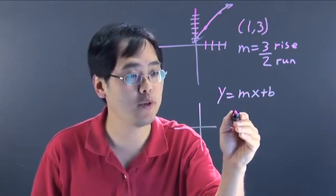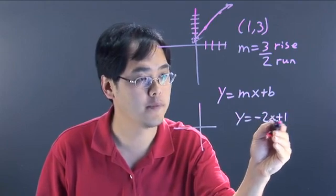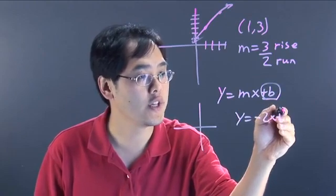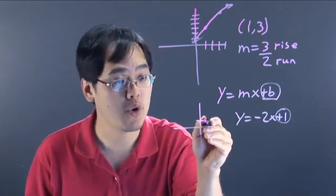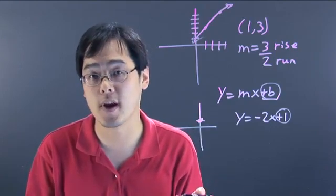Let's just say you have an example, y is equal to negative 2x plus 1. Now what that tells you here is you want to graph the b first, which is the y-intercept, which means it touches the graph at (0, 1). Now from here, you want to use the slope to figure out what your next point is.